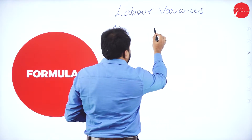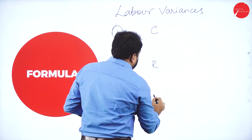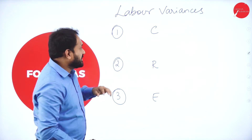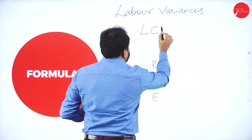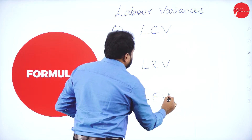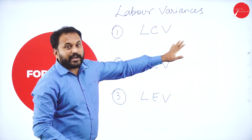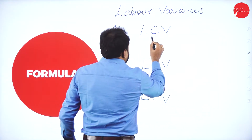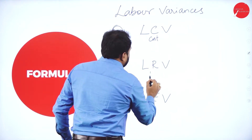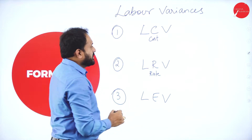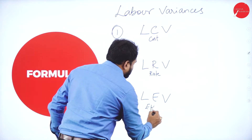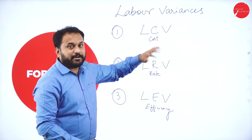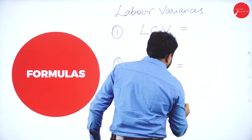CRE stands for: C = Labor Cost Variance (LCV), R = Labor Rate Variance (LRV), E = Labor Efficiency Variance (LEV). LV means labor variance. So we have LCV, LRV, and LEV, each with their own formula.